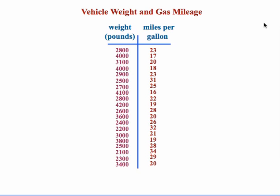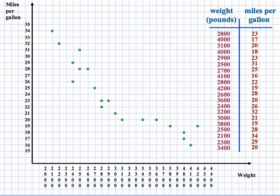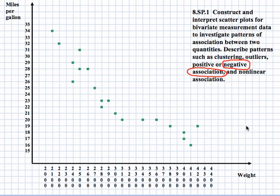Another context examines the relationship between vehicle weight and gas mileage. Plotting the data reveals a negative association that is fairly linear: as the weight of the vehicle increased, the mileage decreased. This is a clear example of a negative association — when one variable increases, the other decreases, and vice versa.